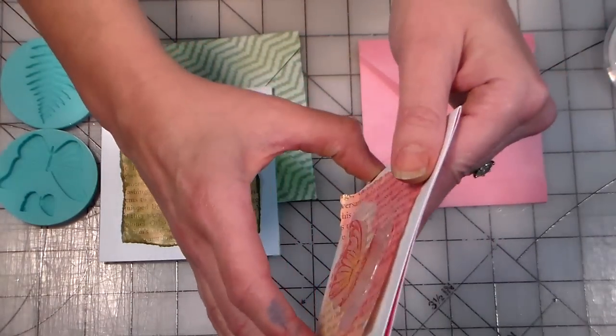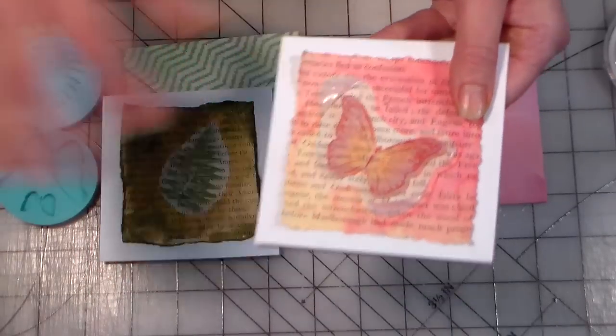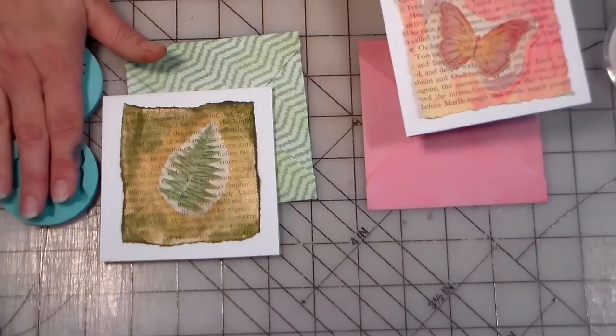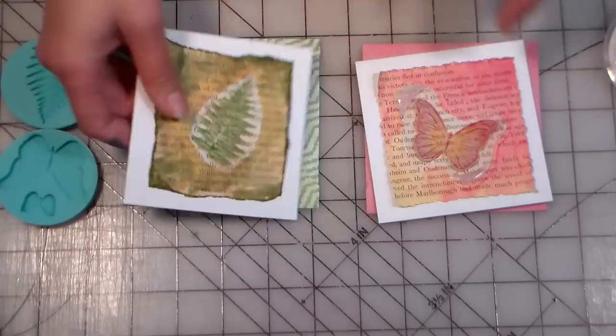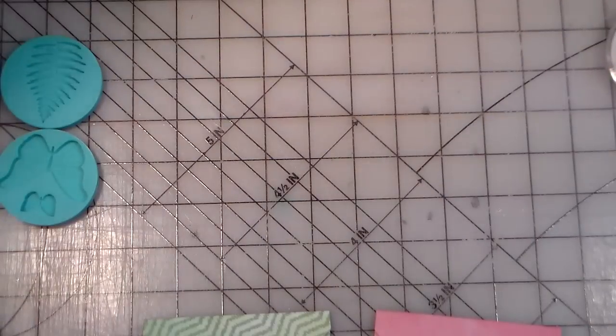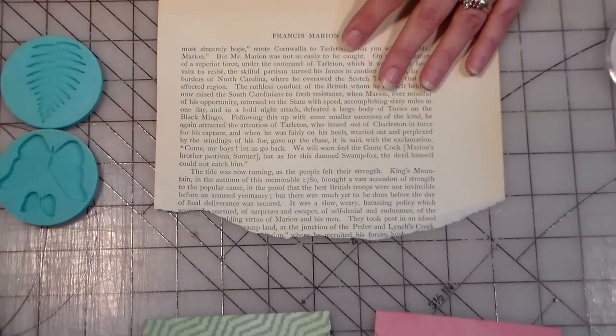So we're gonna make some really fun hot glue cards, and what you need is a glue gun, some silicone molds, and some old book pages. I just ripped out a few pages from some old books that were being thrown away at the library.